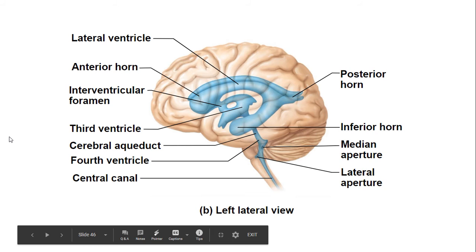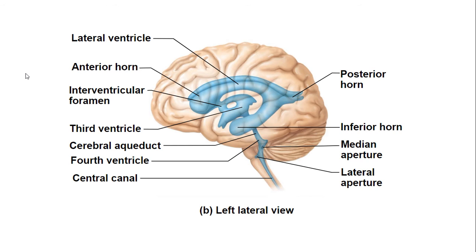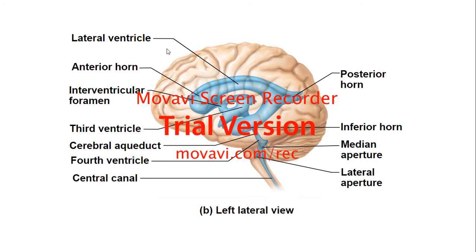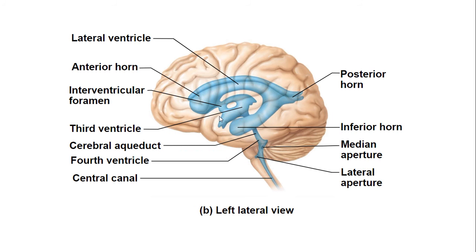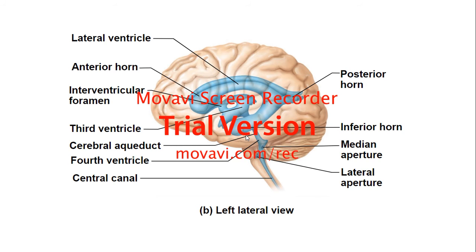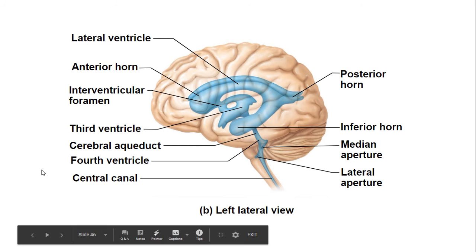Here's a left lateral view of the brain. You can see the lateral ventricle — ventricles are where you'll find your cerebrospinal fluid — with the posterior horn, inferior horn, and anterior horn. You also see the third ventricle, the cerebral aqueduct where cerebrospinal fluid flows, and the central canal, which also contains cerebrospinal fluid.